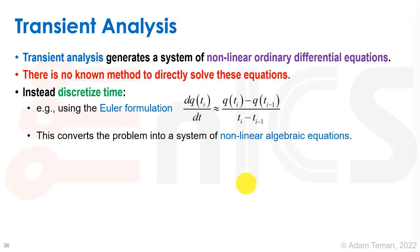Transient analysis generates a system of non-linear ordinary differential equations. There is no known direct method to solve these equations. Instead, we're going to discretize time using the Euler formulation: dq of ti to dt equals q ti minus q ti minus one divided by ti minus ti minus one. It converts the problem into a system of non-linear algebraic equations.